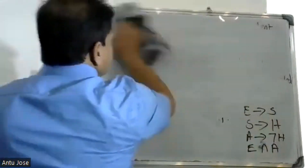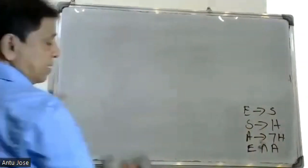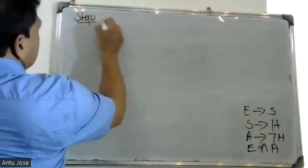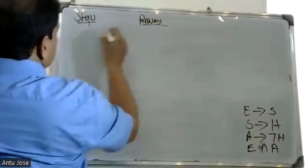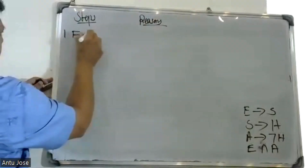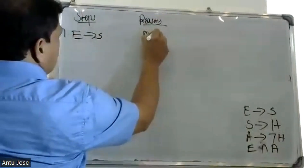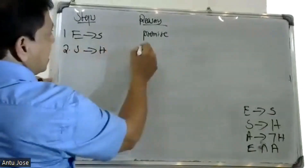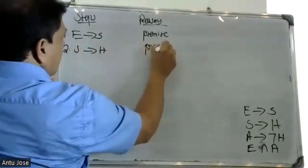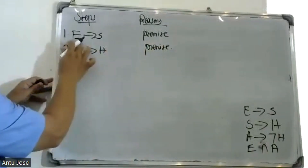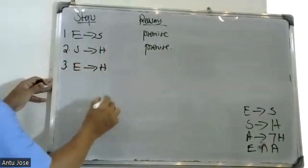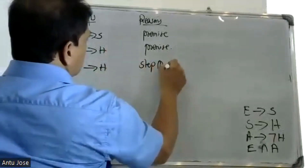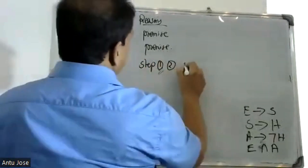First premise: E conditional step. Second premise: S conditional H. E condition S conditional H — step 1 and step 2: p conditional q and q conditional r gives p conditional r.